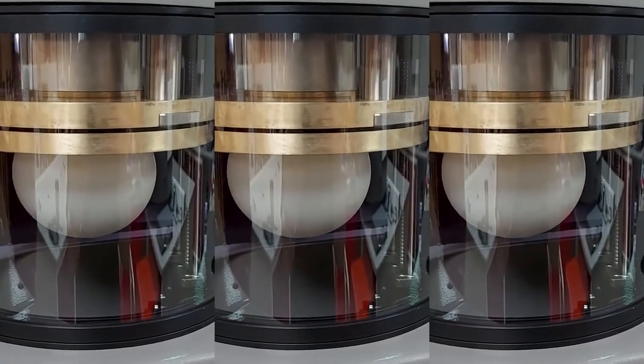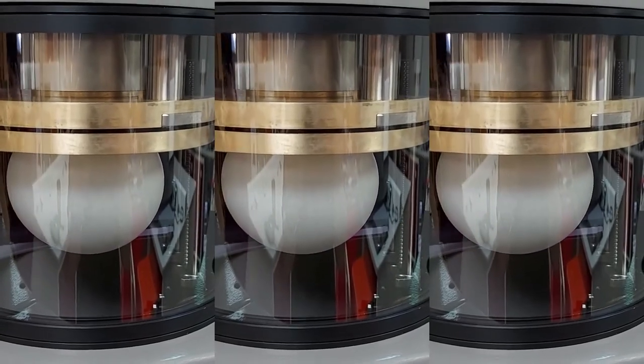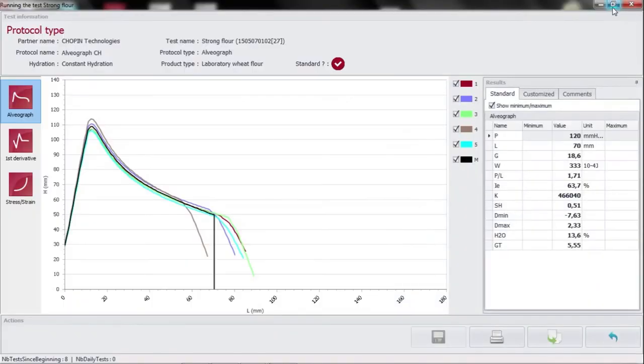Repeat these operations on the 4 remaining dough pieces. Proceed by order of extrusion. The results are measured from the average of the 5 curves obtained. This is called an alveogram.